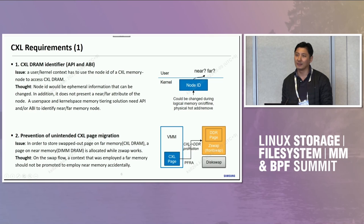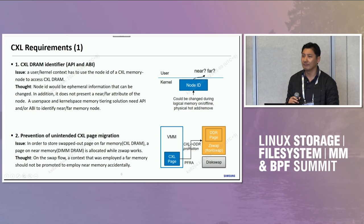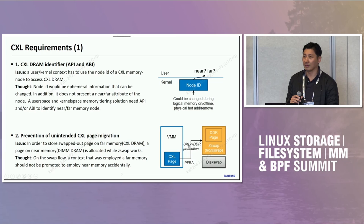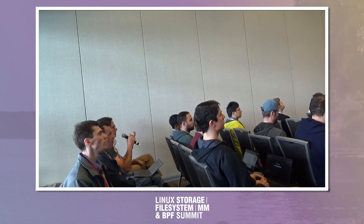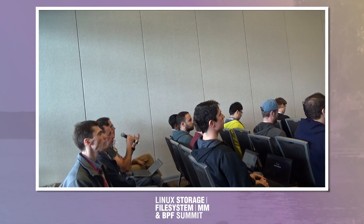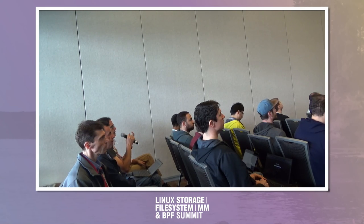I don't think I agree with either of those requirements. We already have the concepts of different remote nodes and ways to do migration. User space doesn't generally need to know — the kernel handles migration to different nodes behind the back of the application, or the application can ask for it using APIs that already exist. I'm really struggling to see what is missing from our current APIs that prevents you from using the NUMA nodes like we currently do.